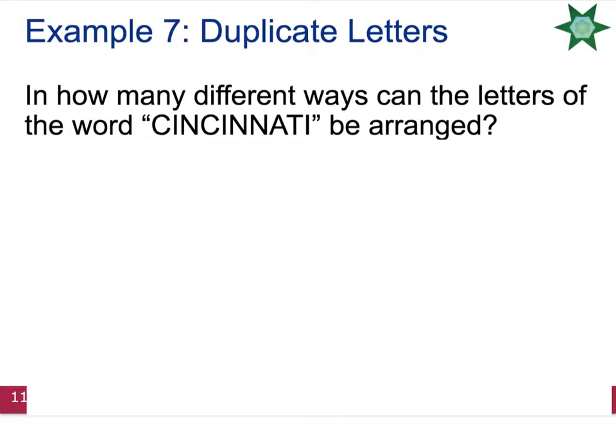In how many different ways can the letters of the word Cincinnati be arranged? So first we need to figure out how many letters there are, and that's going to represent our N. So 1, 2, 3, 4, 5, 6, 7, 8, 9, 10. So there are 10 letters total in our word Cincinnati. So in my numerator, I'll put 10 factorial.